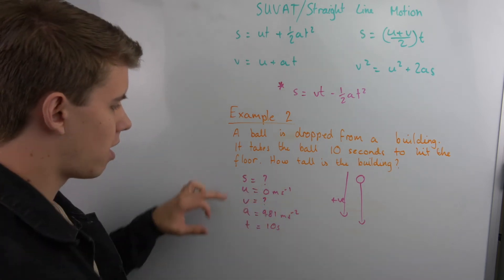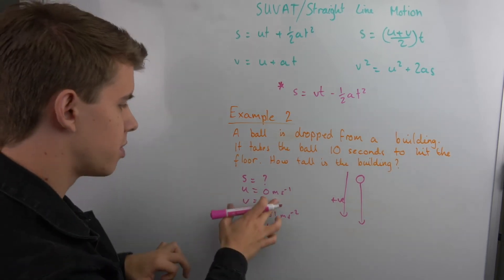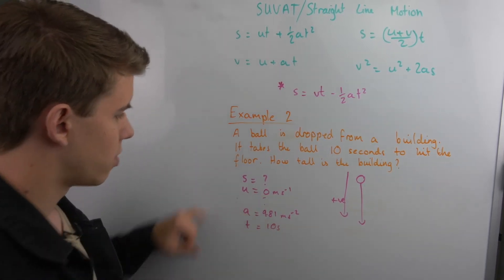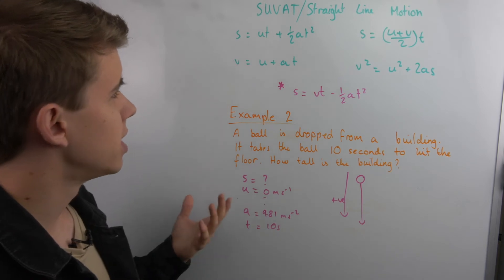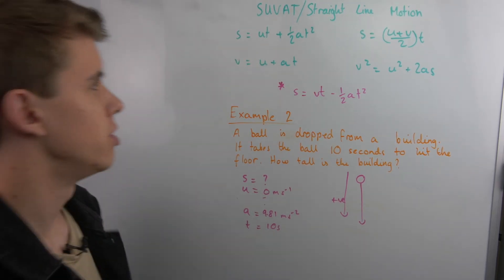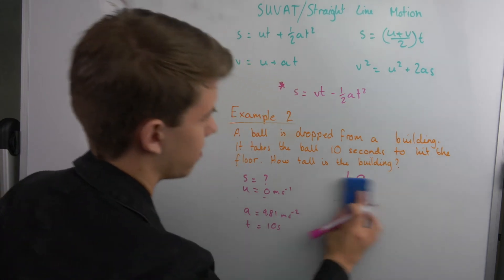So if we've got S, U, we don't need V, so we can get rid of V, and so we have S, U, A, and T. Which one is without V? That's going to be S equals UT plus a half AT squared.